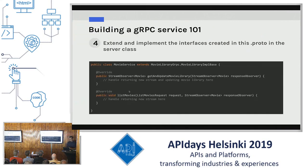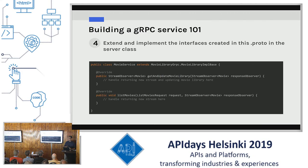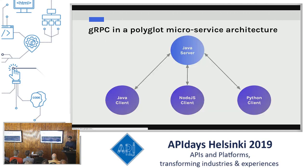Moving on to the fourth and most important part: the service file. The service we create, MovieLibrary, generates a base implementation. In your service you extend that and override the individual methods or RPCs and put your business logic there — and that's it, you're ready to go. The next part is the demo where we discuss gRPC in our polyglot microservice architecture.